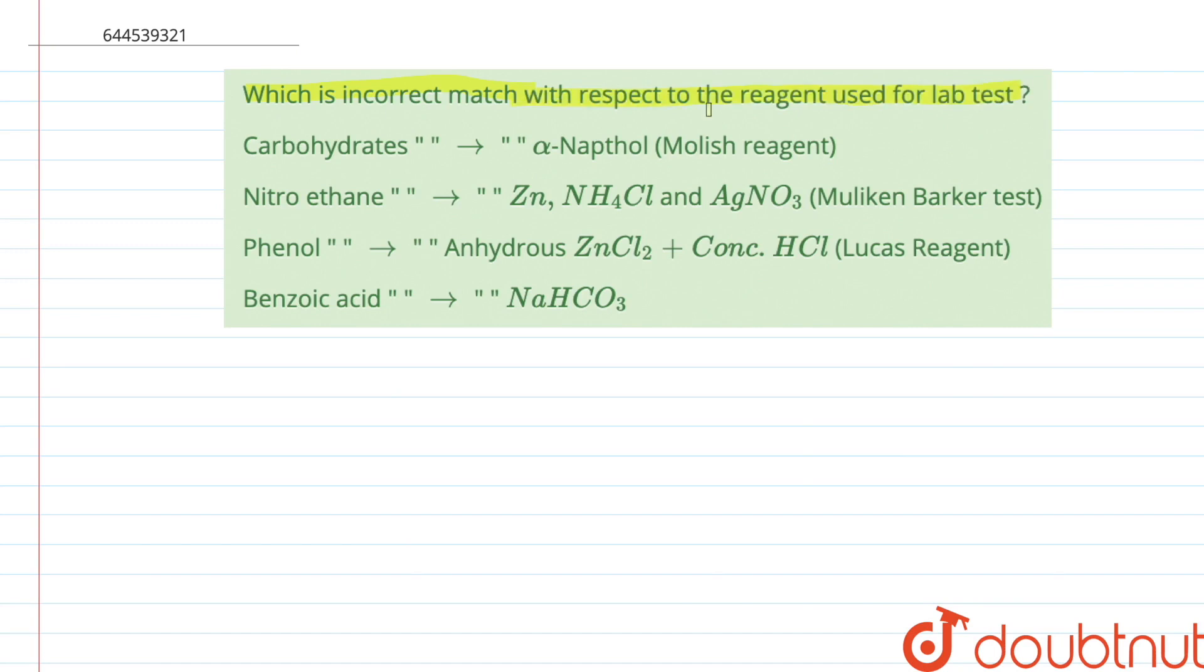Which is correct match with respect to the reagent used for lab test? So in this question we have to tell which of these given options is incorrectly matched for their lab test. Carbohydrates are tested by alpha-naphthol or the Molisch reagent. This given statement is correct since we know that the carbohydrates test is alpha-naphthol.